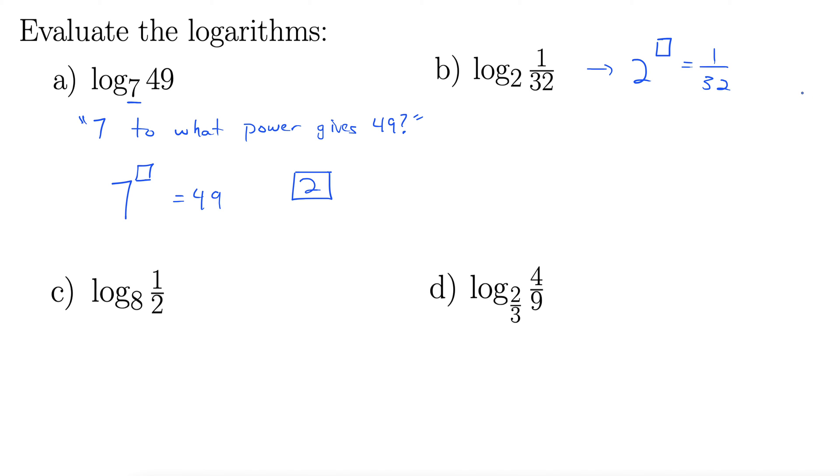Well, remember, to get this down to the denominator, we need a negative exponent. So it's going to be 2 to the negative something equals 1 over 32. Now, 2 to the what equals 32?